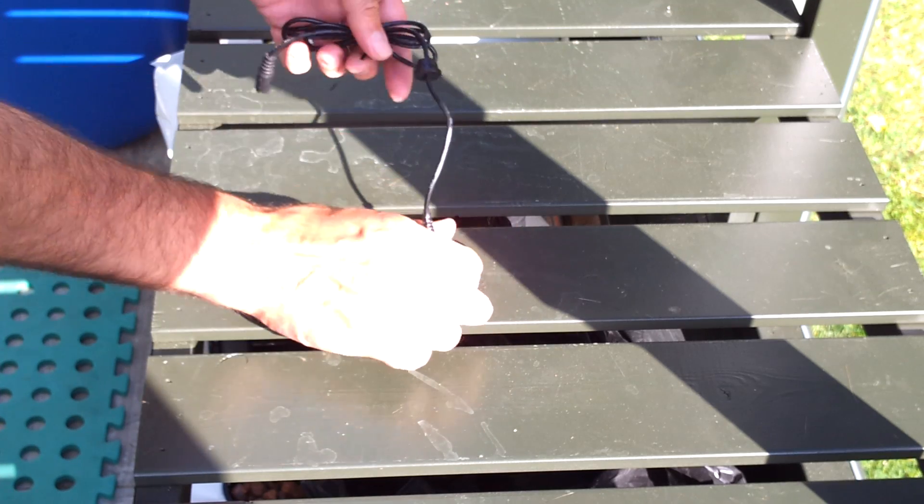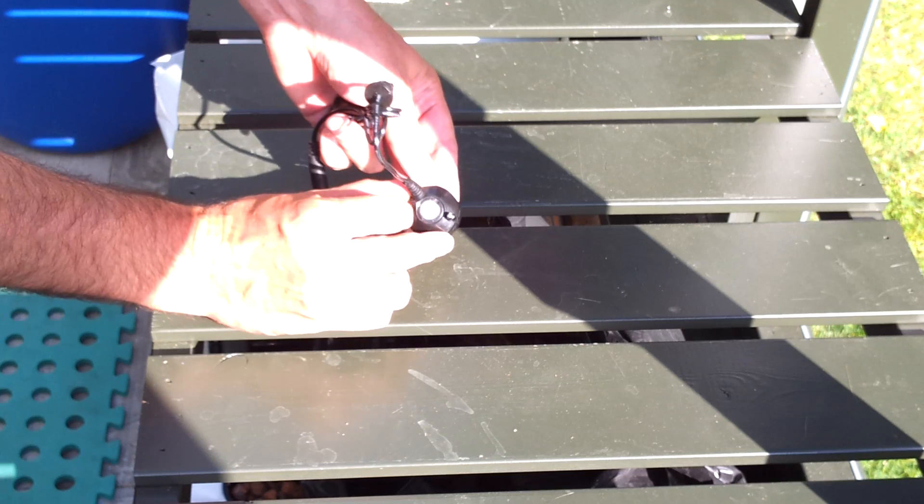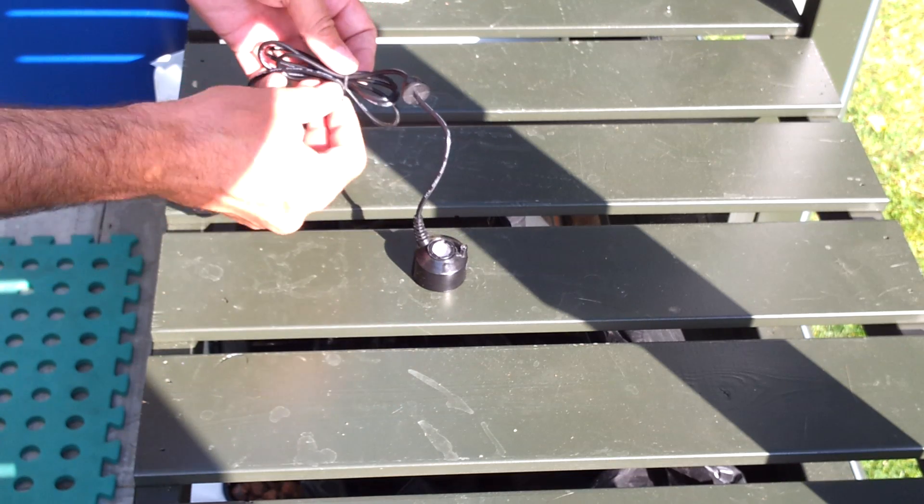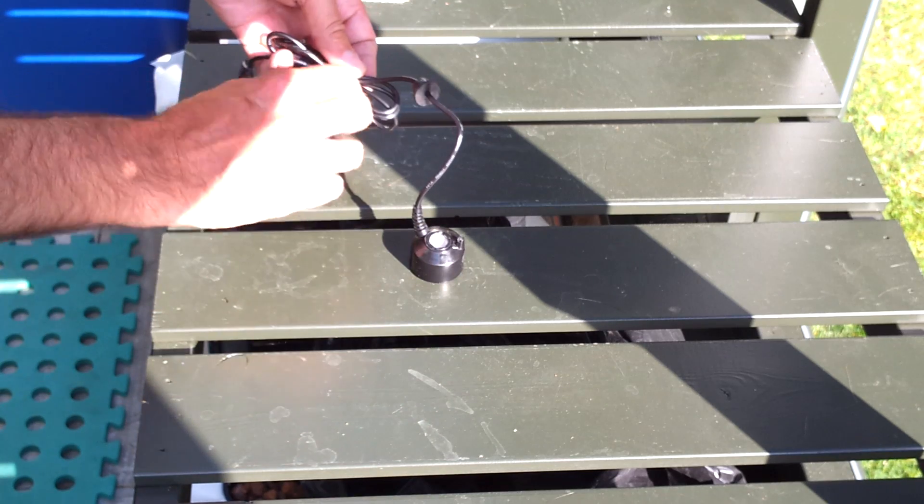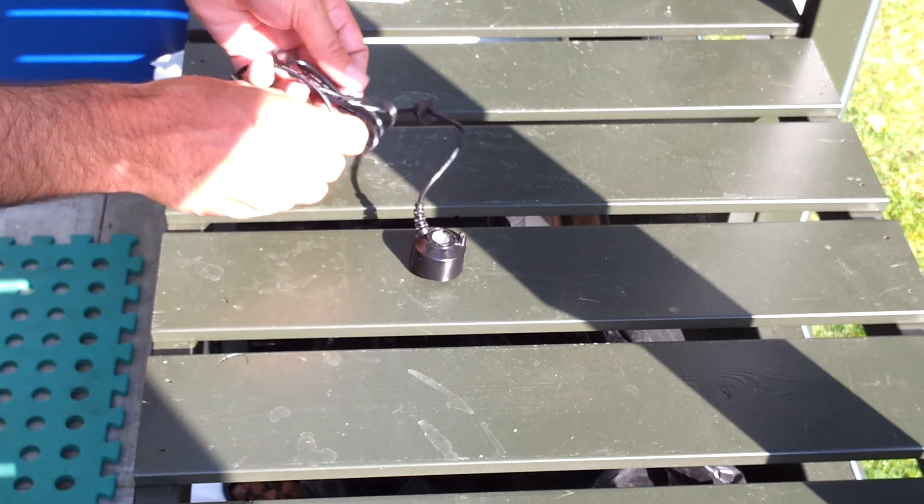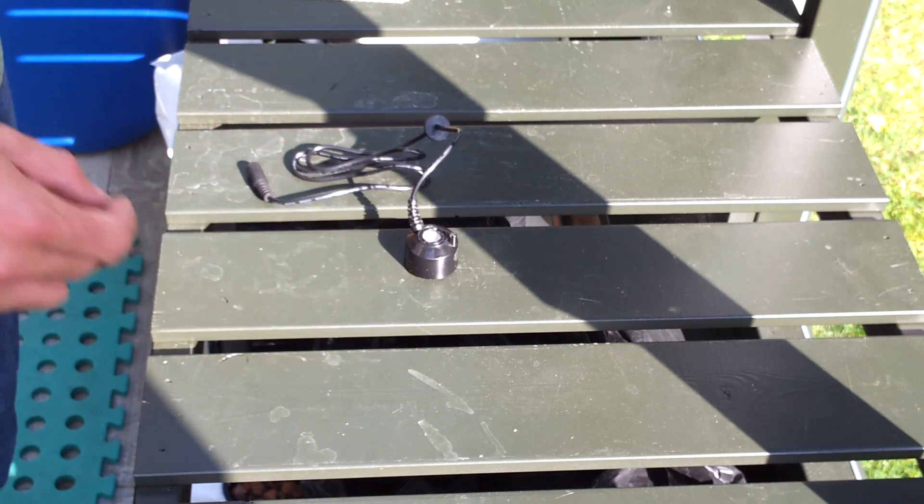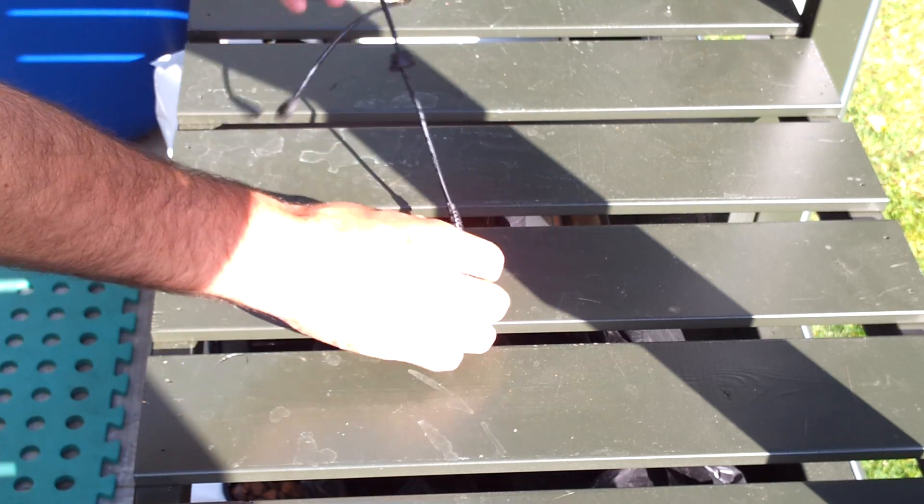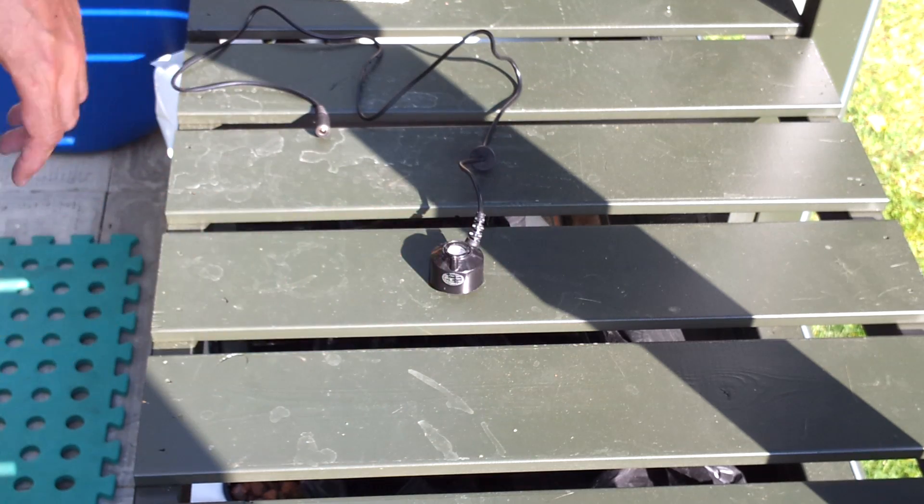So these ultrasonic foggers, they've just got a little piezo transducer, that metal disc in the middle, which vibrates, shakes very, very fast. This little pillar on the side there is a water level sensor, so they won't actually turn on unless they're covered with water because otherwise they'd overheat. They don't put out a lot of heat, they don't use a lot of power, but they would overheat if they were just running in the air.